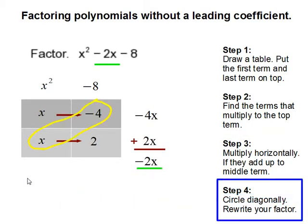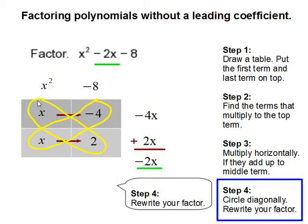So once they match, all we have to do left is to circle diagonally for our box. And then we can write out the factor. So x negative 4 is x minus 4. x and positive 2 is x plus 2.